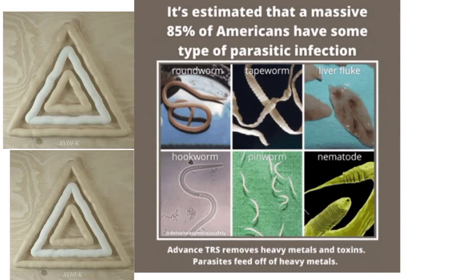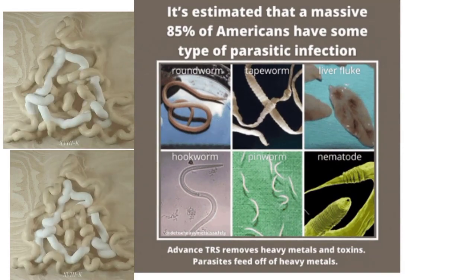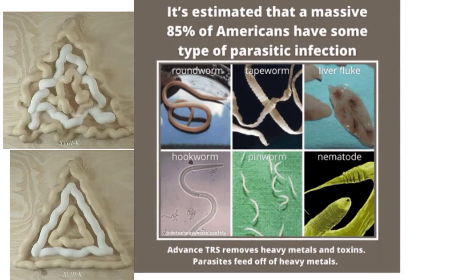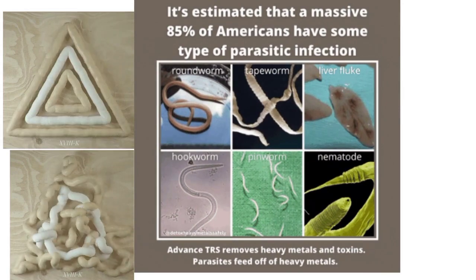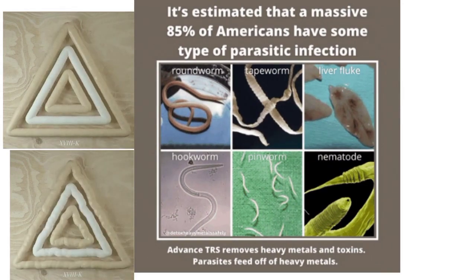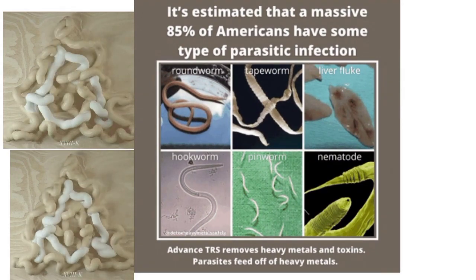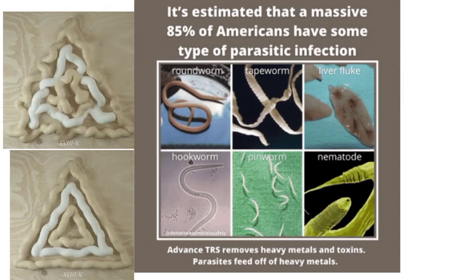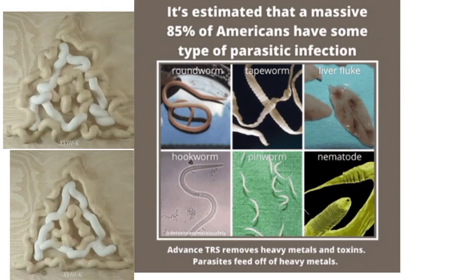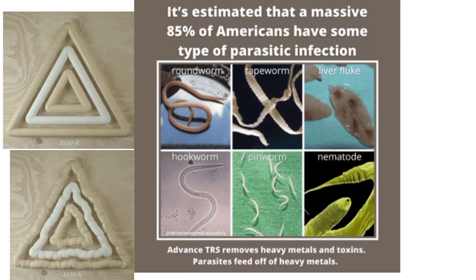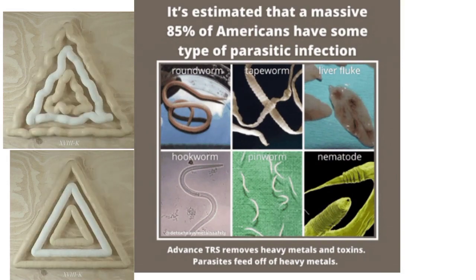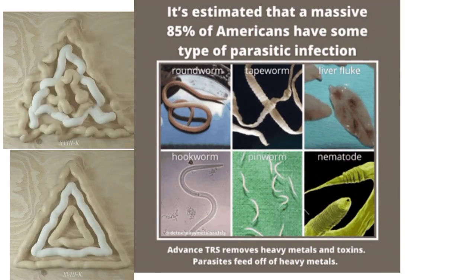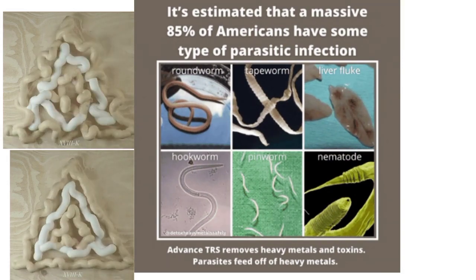In parasitism, one organism, which is the parasite, lives on or inside another organism known as the host, causing it some harm. For example, a tapeworm living in a human's intestine gains digested food, shelter and protection in the intestine. The infected person may suffer from loss of appetite and loss of weight.